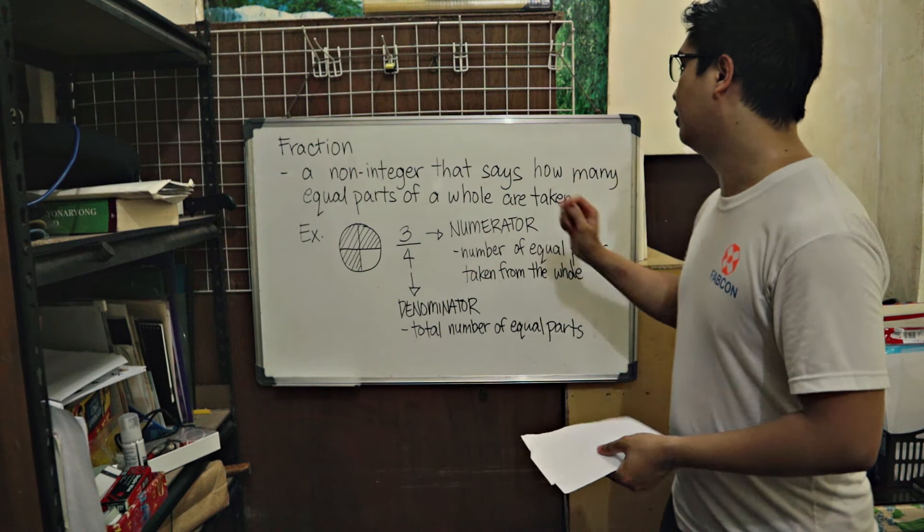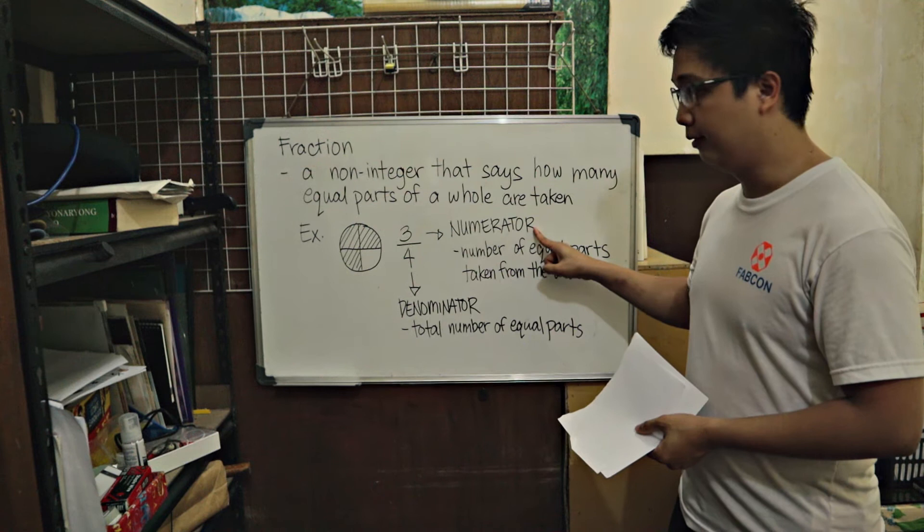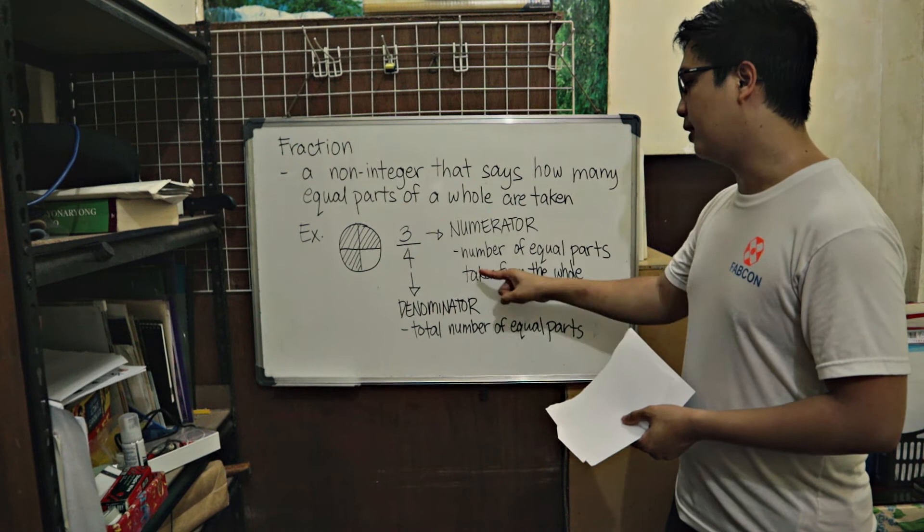Fraction. A fraction is a non-integer that says how many equal parts of a whole are taken. Example, 3 fourths. 3 ang atong nga numerator. 4 ang atong nga denominator. The numerator is the number of equal parts taken from the whole.